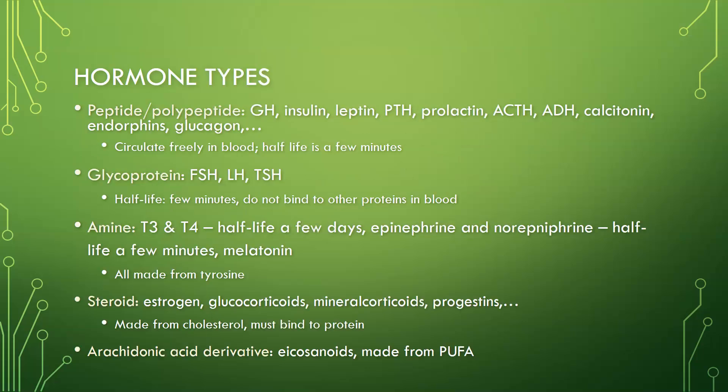The different types of hormones floating around in the body include peptides and polypeptides. Examples would be growth hormone, insulin, leptin, parathyroid hormone, prolactin, adrenocorticotropic hormone, antidiuretic hormone, calcitonin, endorphins, and glucagon. These are all examples of peptide or polypeptide hormones. They circulate freely in blood, and the half-life is a few minutes.